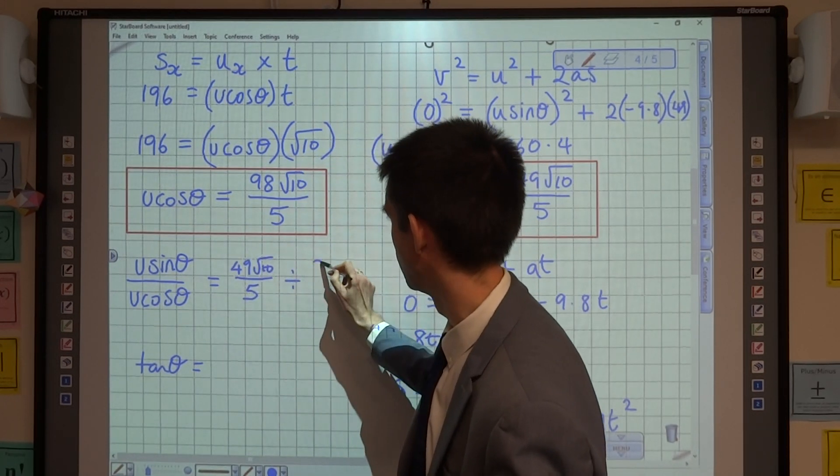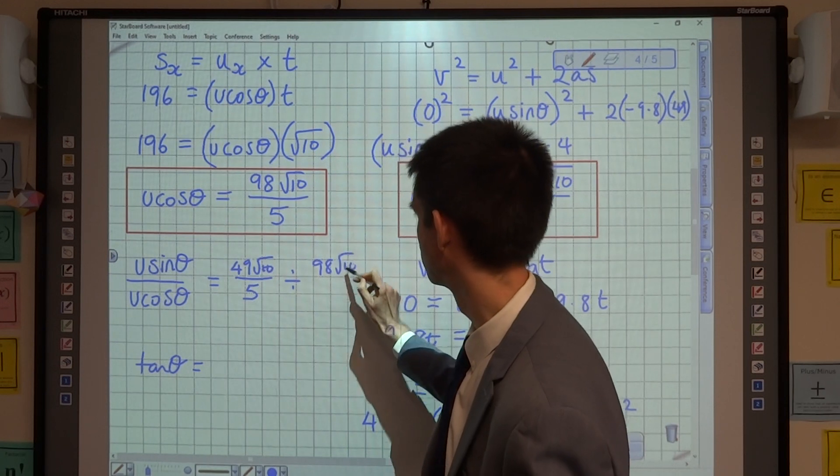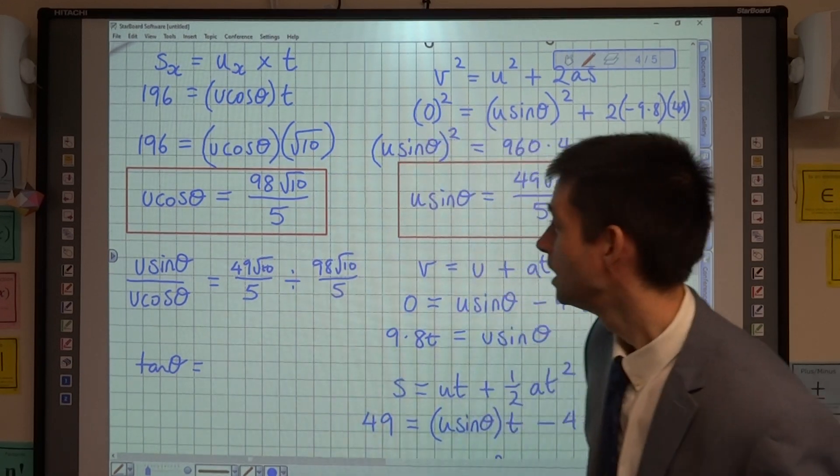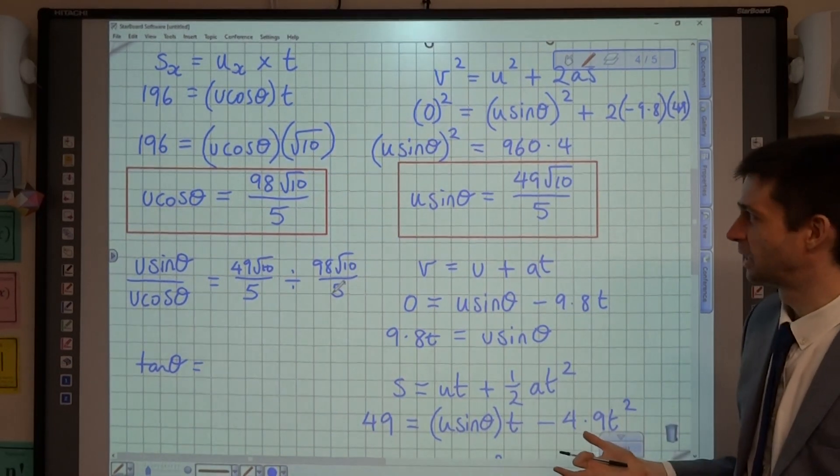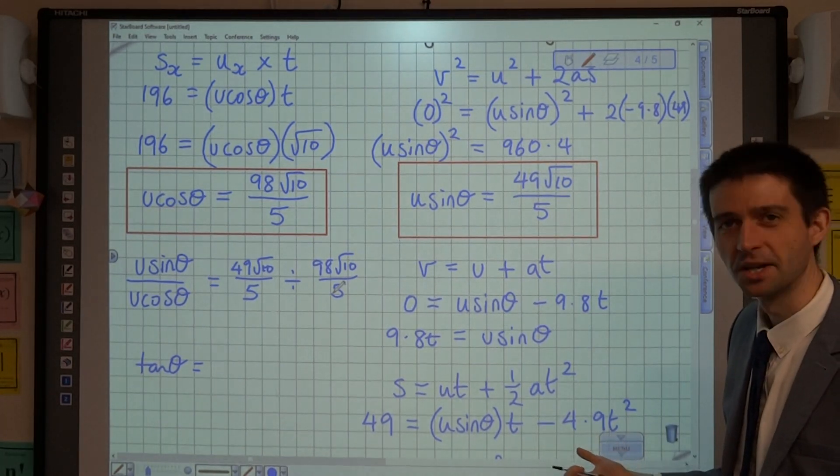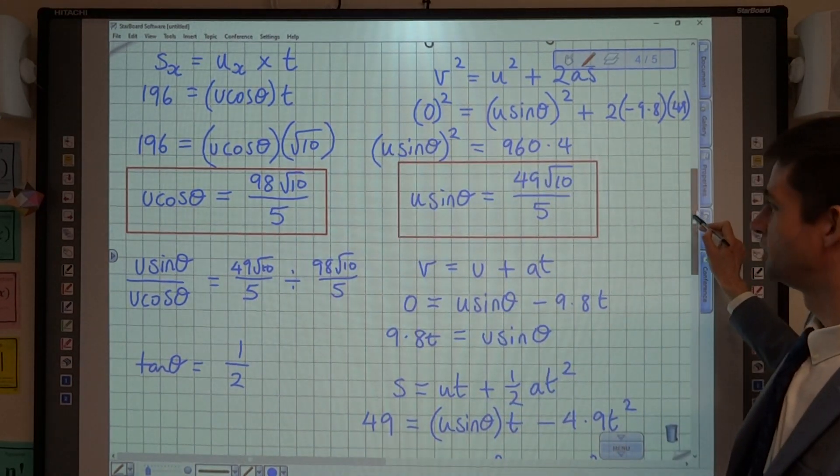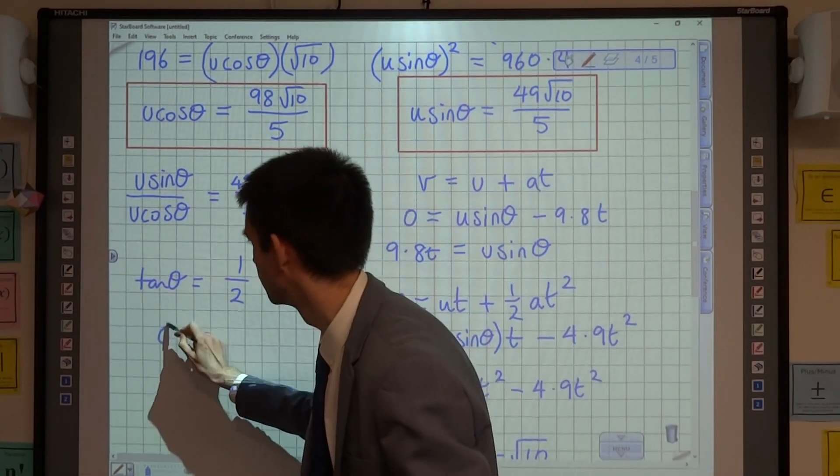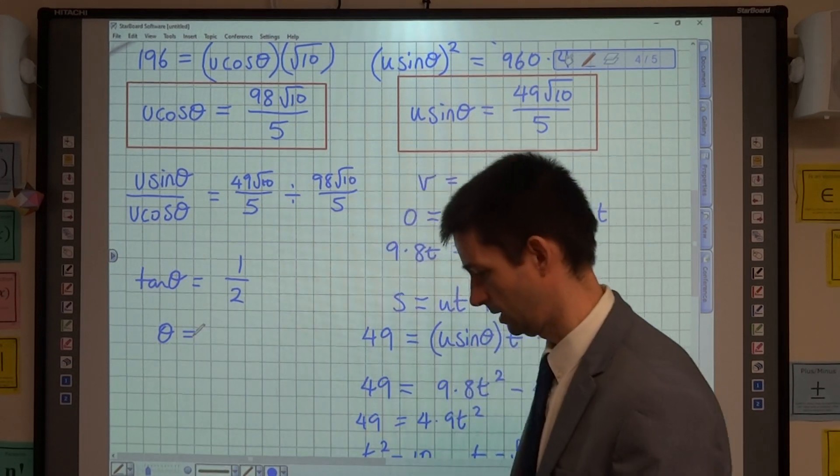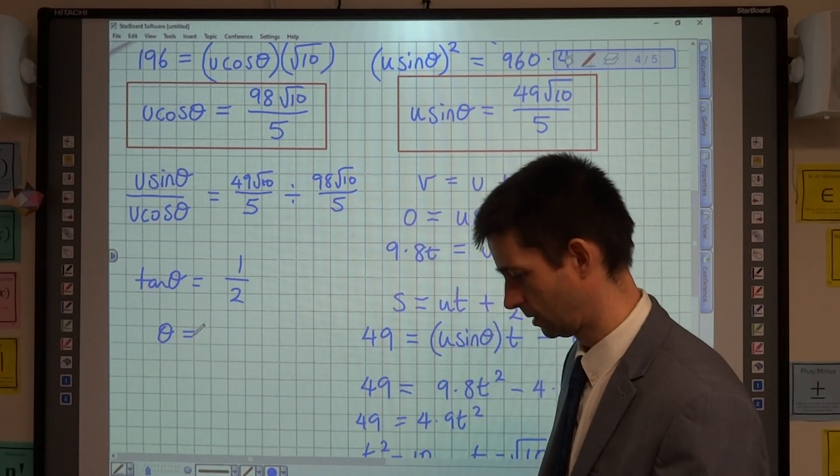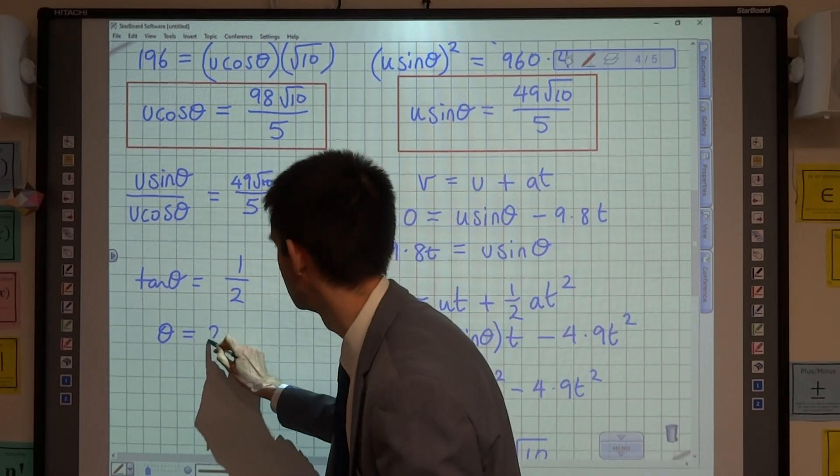So I'm just going to write that as division. So you can either put that in your calculator, or you might just be able to see, oh, that's actually quite beautiful because it's a half. So the value of tan theta is a half, which means using my calculator in degrees mode, I can get that theta is 26.56.